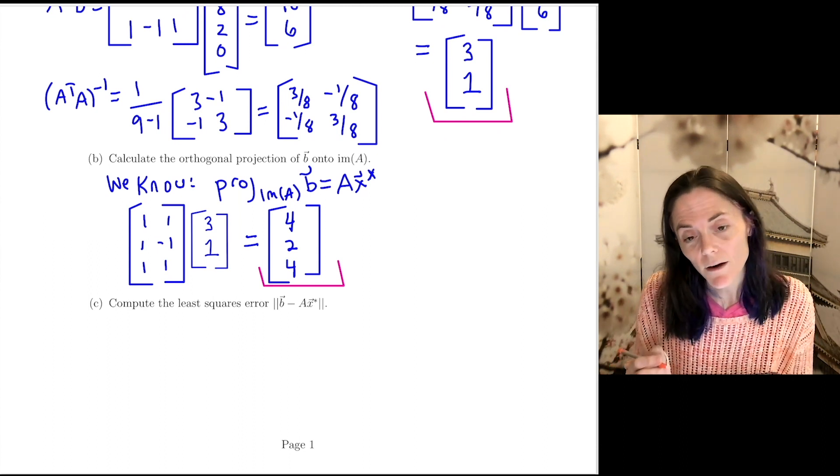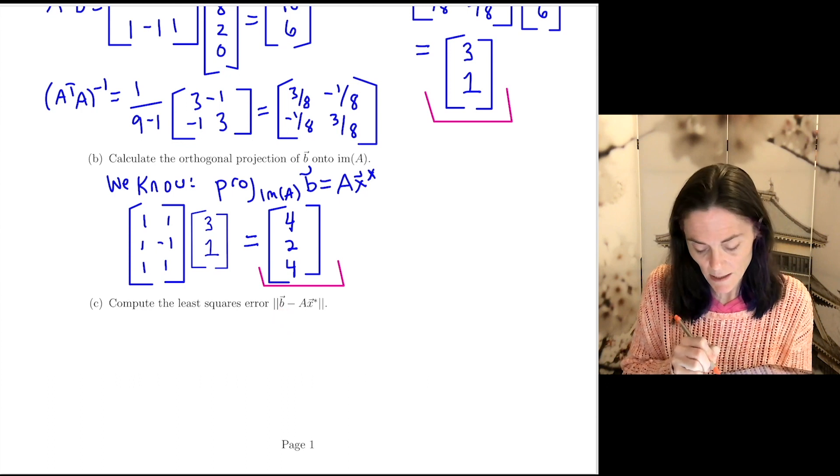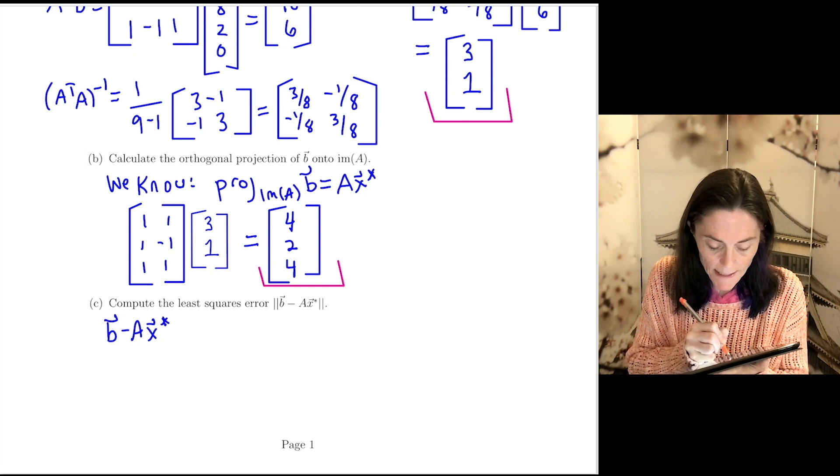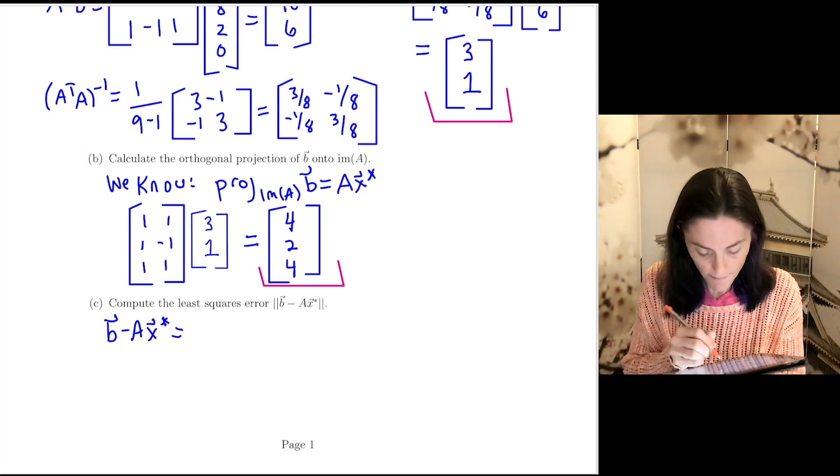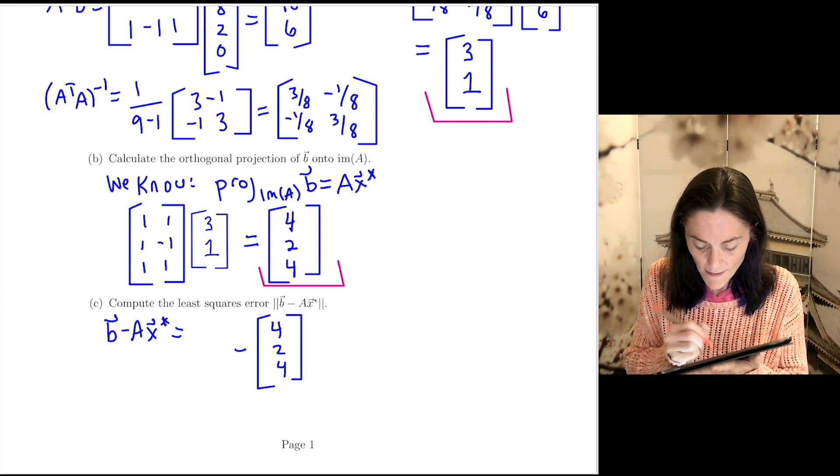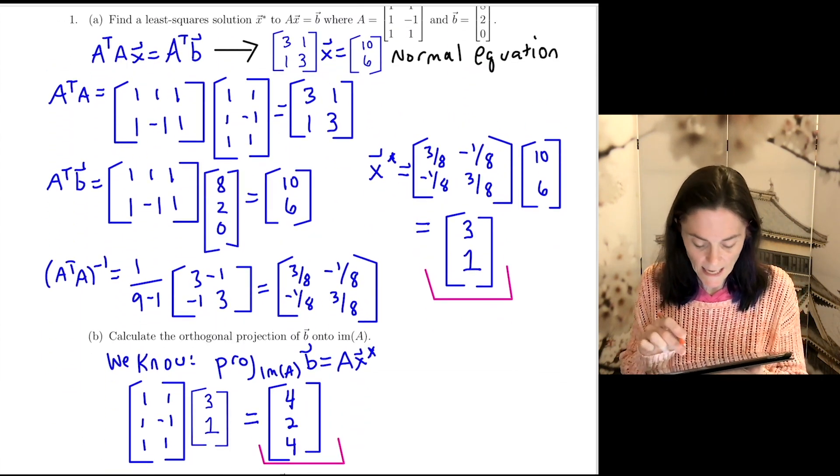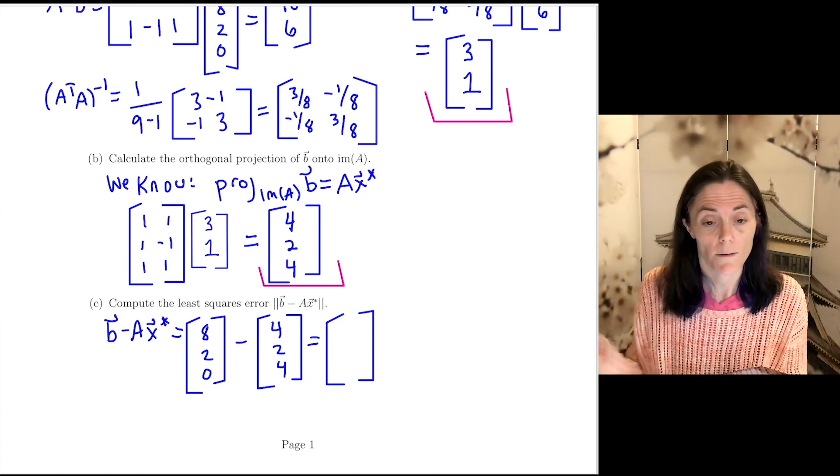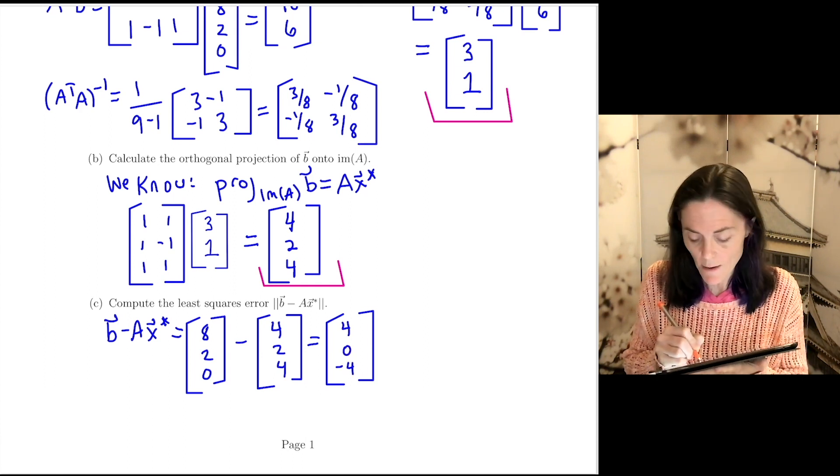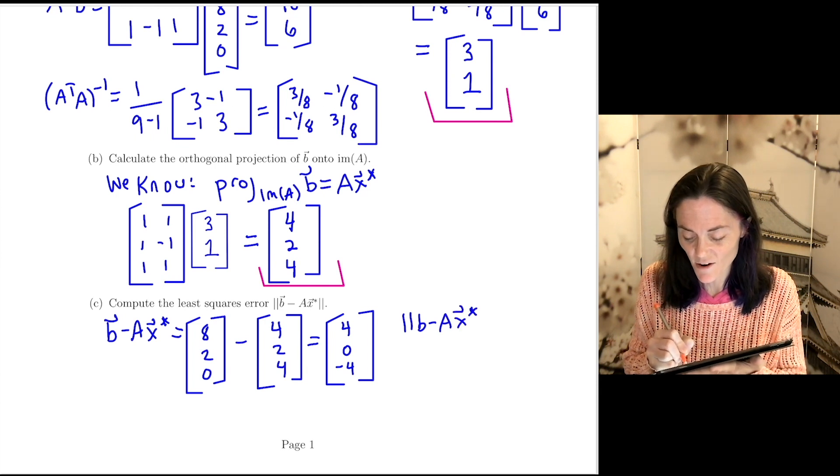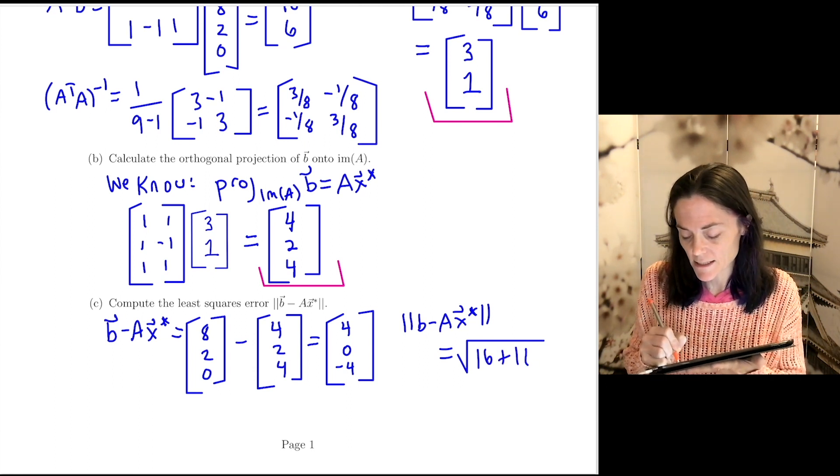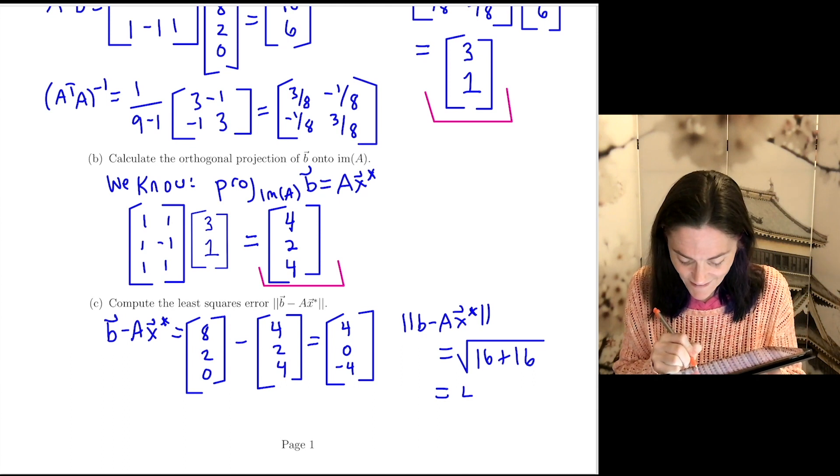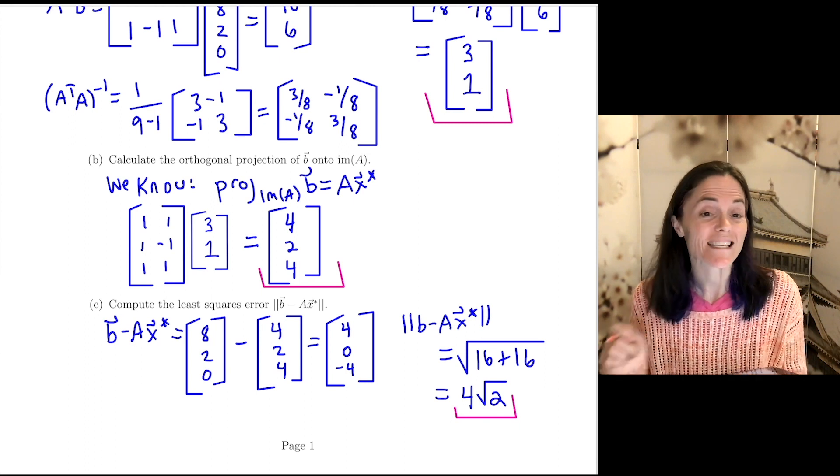Now the third part, we compute the least square's error. This is the shortest distance that B can be from any point in the image of A. And so what we want is a length. First, let's just compute B minus AX star. Then we can calculate its length. But you see, we have AX star. Maybe I'll write that one first. This is 4, 2, 4. And then the vector B was given in the problem. This was 8, 2, 0. We can just subtract these two vectors. I get 4, 0, minus 4. And now I can compute the length of B minus AX star. This is a square root of 16 plus 16, which I can factor a 4 out here. It's square root of 32, which is 4 square root 2. This will be my least square's error. So this is this least square's problem, number one.